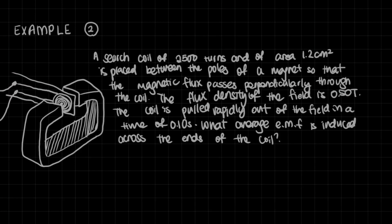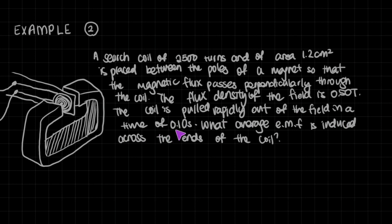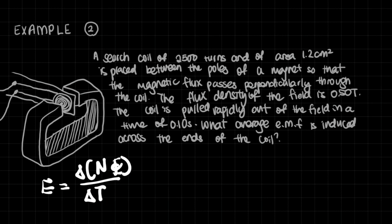Let's take a look at the slightly more complicated example two. A surge coil of 2,500 turns and an area of 1.2 cm² is placed between the poles of a magnet so that the magnetic flux passes perpendicularly through the coil. The flux density is 0.50 Tesla. The coil is pulled rapidly out of the field in a time of 0.10 seconds. What average EMF is induced across the ends of the coil? We write E = ΔNΦ/Δt. We know Δt = 0.1 and N = 2,500.